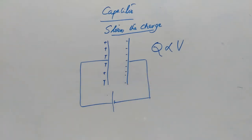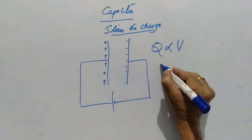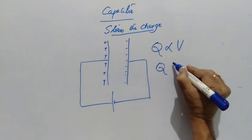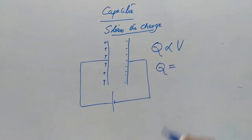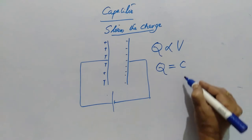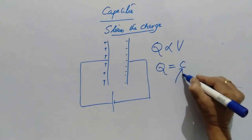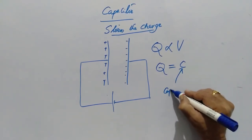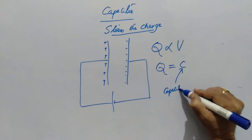So I can write Q is directly proportional to V. To remove the proportional sign, to write an equation, I have to multiply it by a constant. This constant, C, is called capacitance.